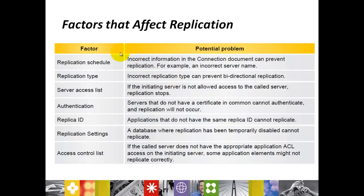Server Access List: if the initiating server is not allowed access to the called server, replication stops. Both servers should have each other's server names listed in the server access field. Authentication: servers that do not have a certificate in common cannot authenticate and replication will never work. Both servers must be cross-certified with each other so a common certificate exists to authenticate, allowing the replication process to run smoothly.